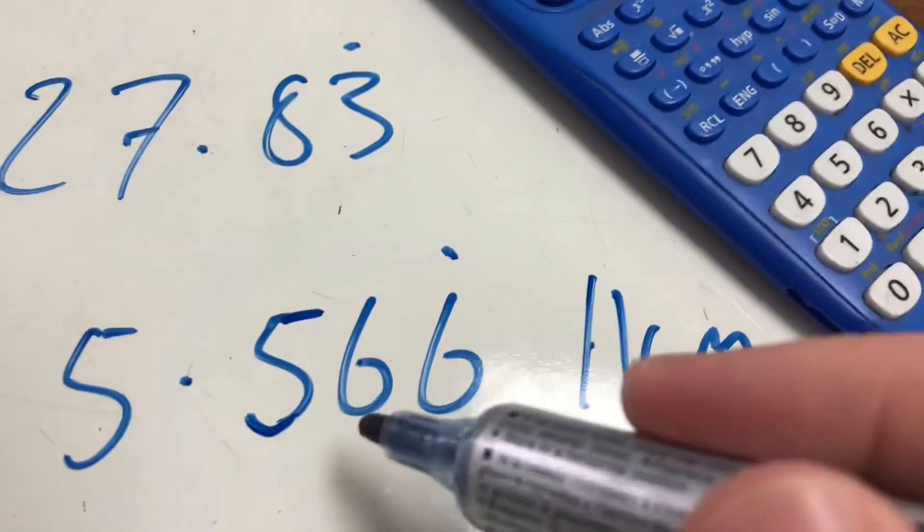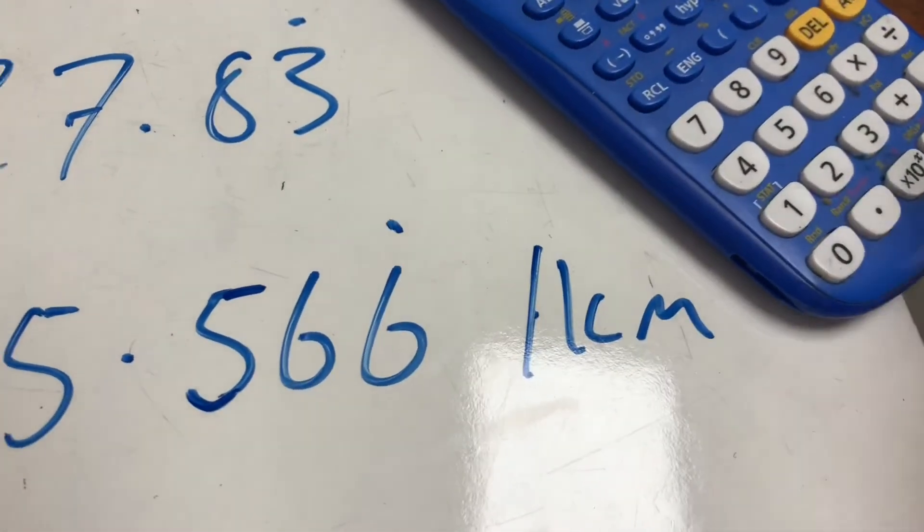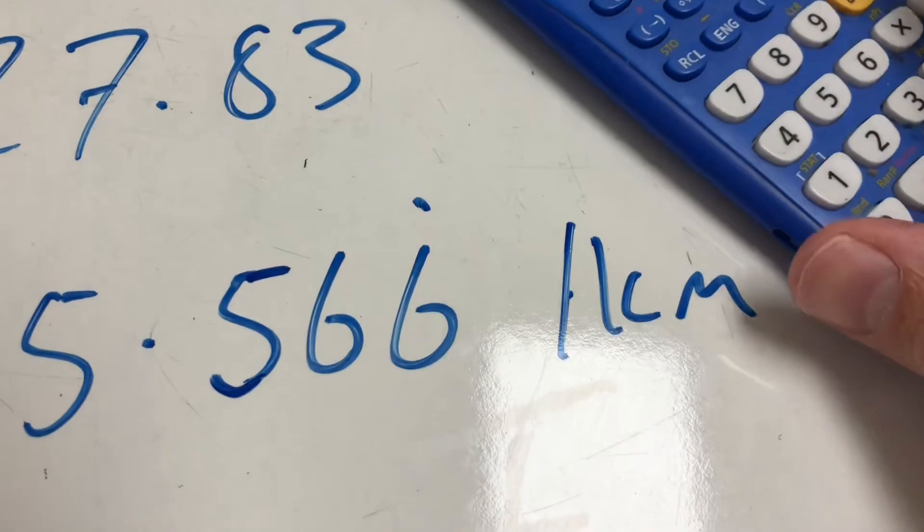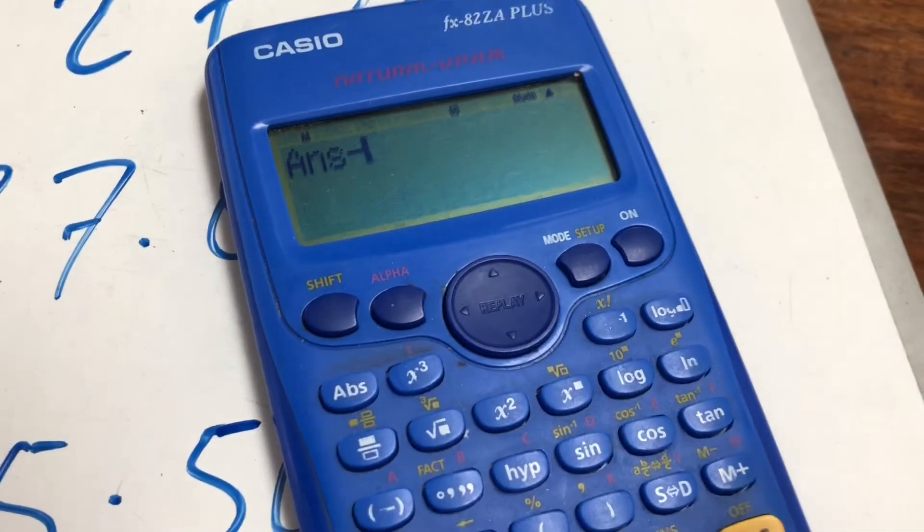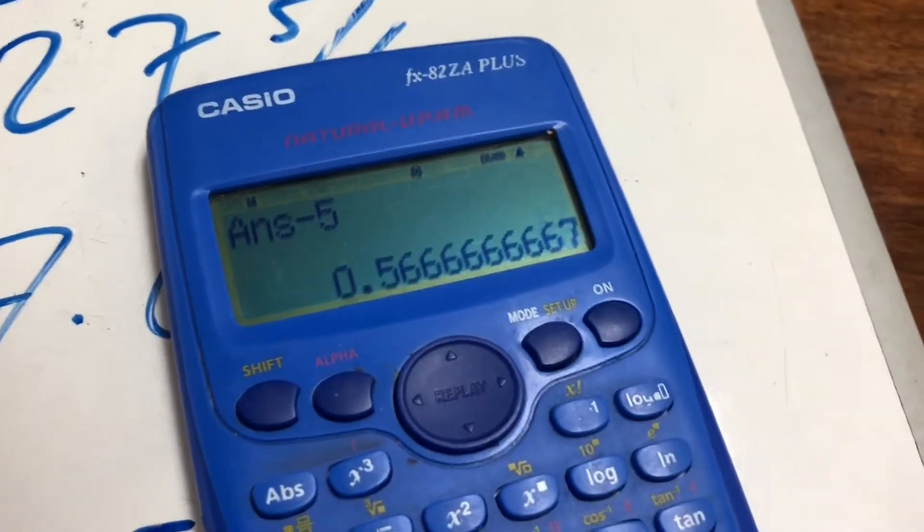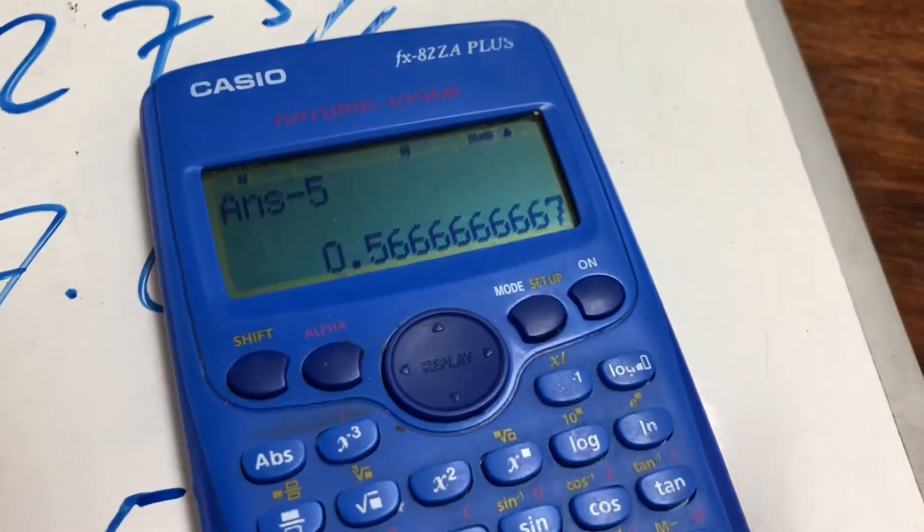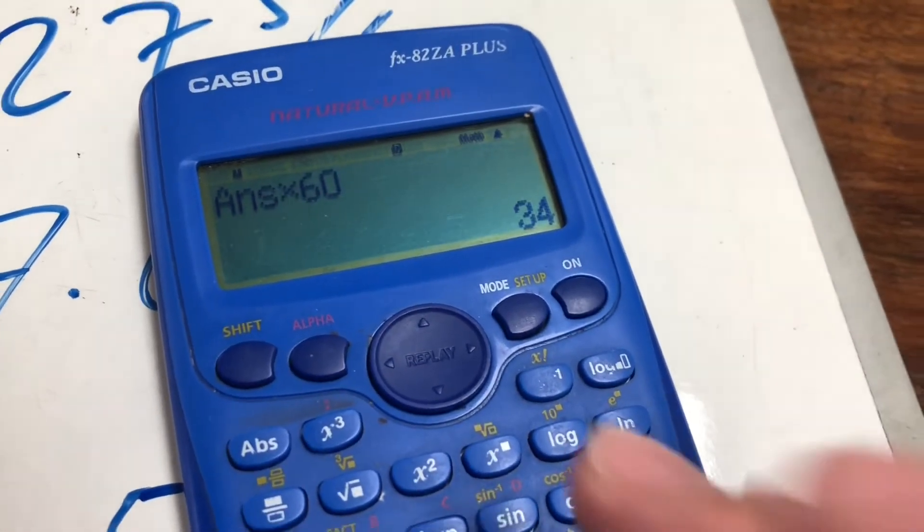OK, but now you want to turn that back into time. So speed, distance and time as well as minutes to hours. If I want to work out what that is of a minute, I times that by 60. You can see it's 34.